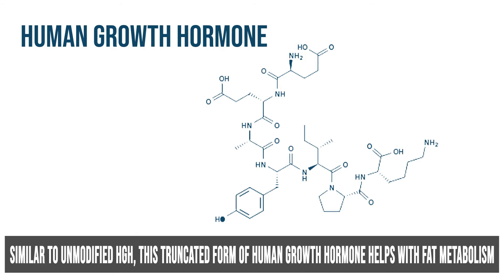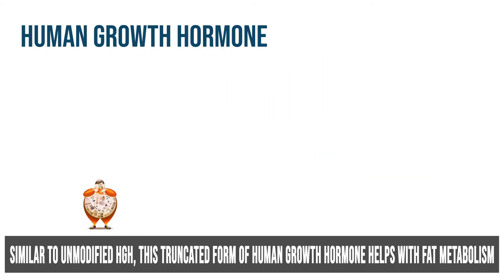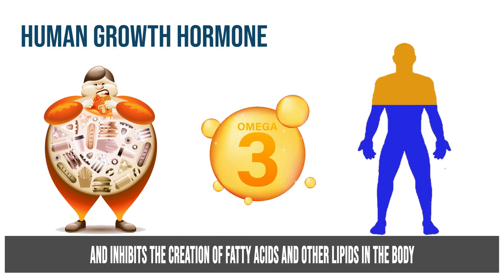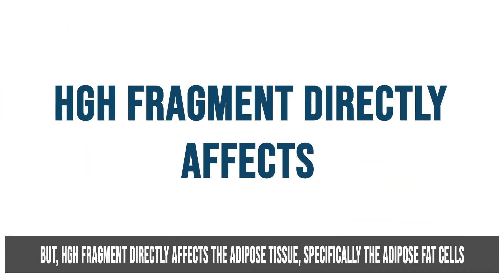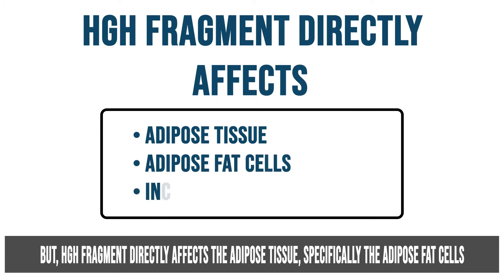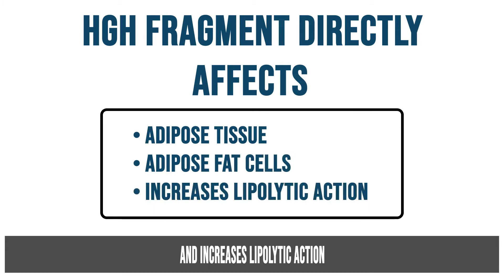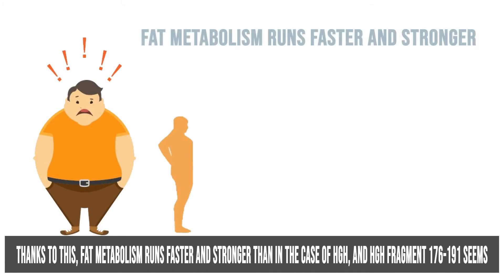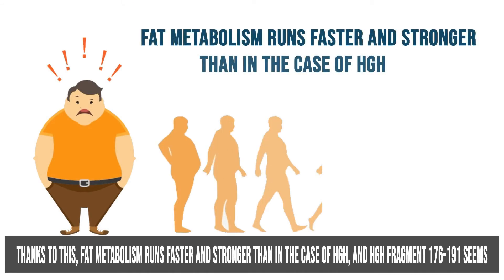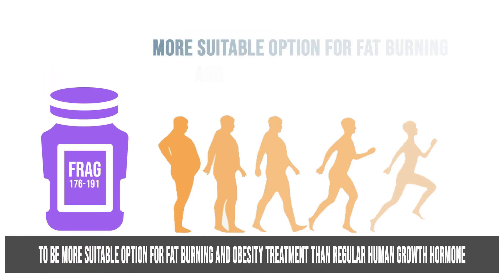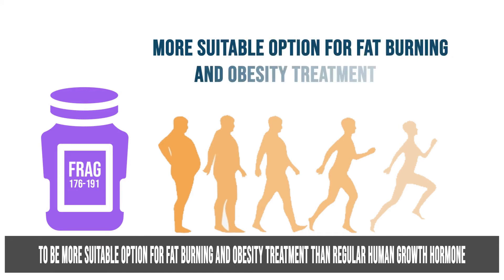Similar to unmodified HGH, this truncated form of human growth hormone helps with fat metabolism and inhibits the creation of fatty acids and other lipids in the body. HGH Fragment directly affects the adipose tissue — specifically the adipose fat cells — and increases lipolytic action. Thanks to this, fat metabolism runs faster and stronger than in the case of HGH, making HGH Fragment 176-191 a more suitable option for fat burning and obesity treatment.